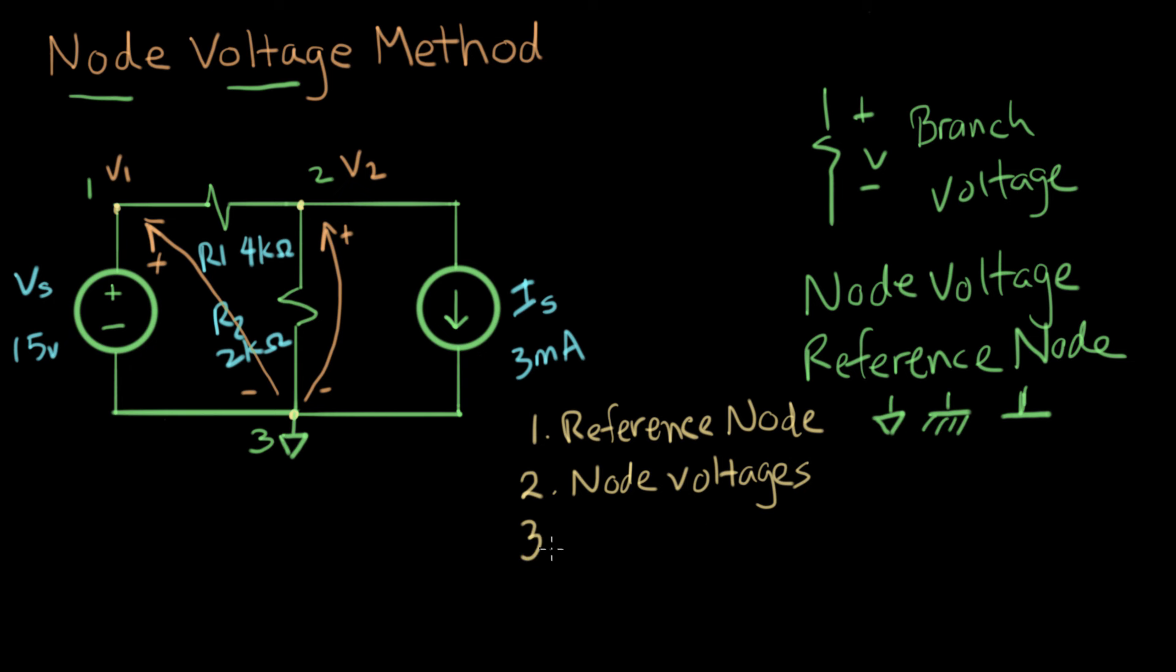Okay, the third step. The third step is to solve the easy nodes. And I'll show you what that means in a second. The fourth step is to write KCL, Kirchhoff's current law equations. And the fifth step is to solve the equations. That's the node voltage method. And we're going to go through the rest of this. We've done the first two steps. And now we're going to solve, what does it mean to solve the easy nodes?